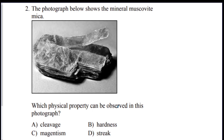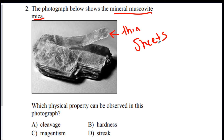Number two: which property can be observed in this picture? You can go look at muscovite mica on page 16, and it will tell you if it has cleavage or fracture. But since this is in thin sheets, this is cleavage. So the answer would be A.